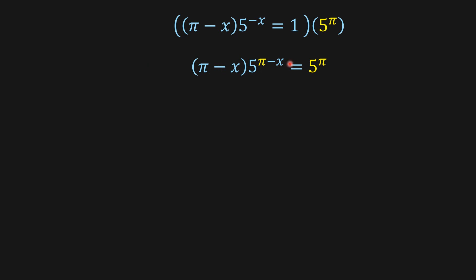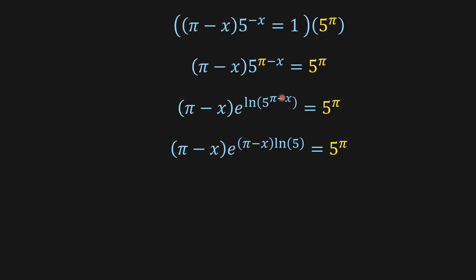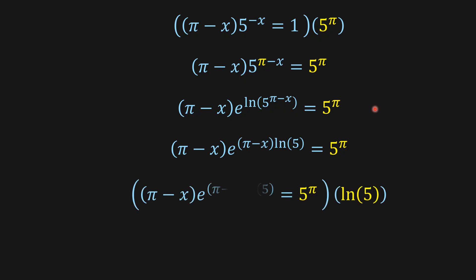From here we're going to have this. We know that e to the ln of something is that thing, so e to the ln of 5 to the pi minus x is equal to 5 to the pi minus x. So we wrote this thing like this. We can bring this power here, multiplying ln of 5. But if we see this power, it's not equal to this because we have ln of 5 here. So in order to have ln of 5 here multiplying, we're going to have to multiply both sides of the equation by ln of 5.